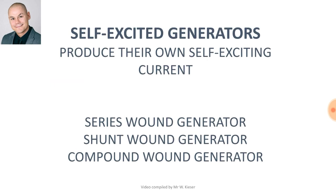There are three types of self-excited generators: series, shunt, and compound. They are called self-exciting because they produce their own self-exciting current.